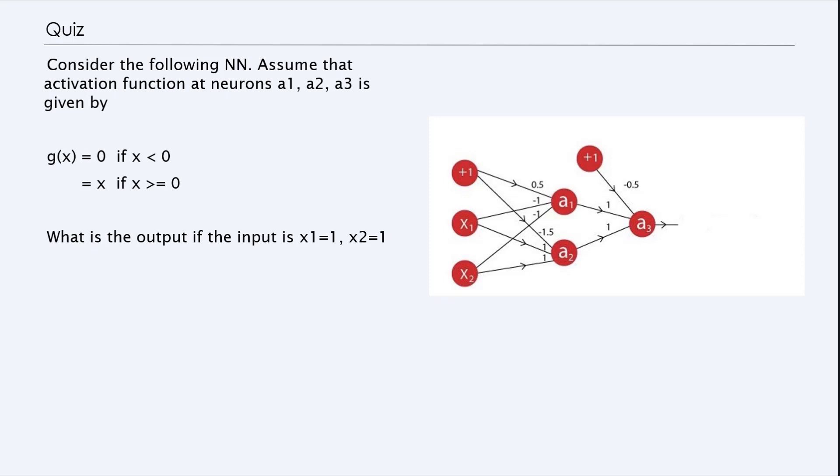So here's another problem where we are trying to understand how the neural network works. Let's suppose that we have this neural network where the bias for A1 is given by, if you're going to compute A1 as a linear sum, you get 1 times 0.5, x1 times minus 1, where x1 is 1, and x2 times minus 1. So you get a number here, and then once you get the number, you have to apply the activation function. The activation function says if the number is negative, then you use a 0 for that. If the number is positive, you use the number itself.